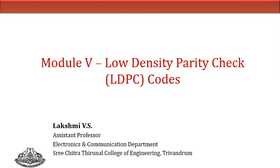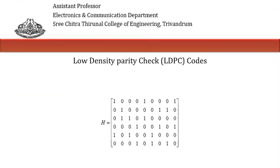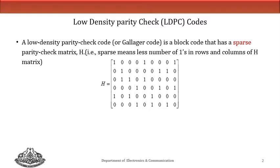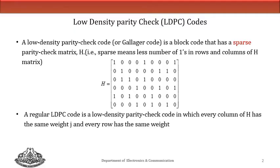Low-Density Parity Check Codes, or LDPC Codes, are block codes. The peculiarity of LDPC codes is that the parity check matrix H will be sparse. Sparse means the parity check matrix consists of a lesser number of ones in its rows as well as columns. This is a typical parity check matrix H for an LDPC code, and when you look at it row-wise and column-wise, you can see that very few ones are present.